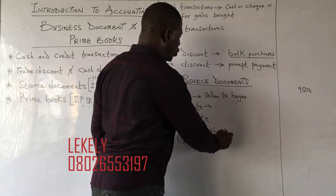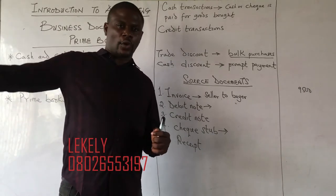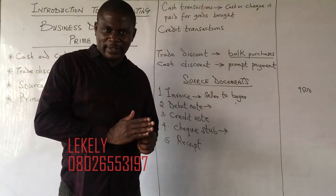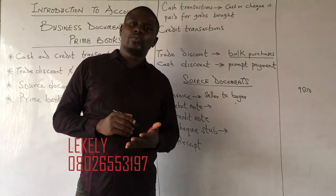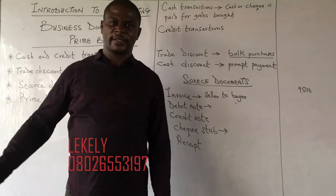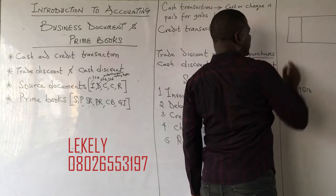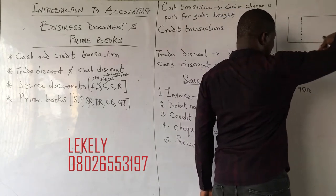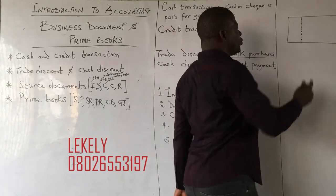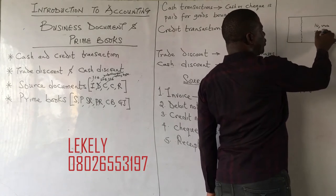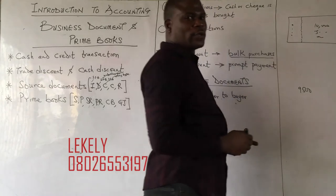The next source document is the check stub. When you write a check and cut it for someone, there is a small part of that check that is left — that small remaining part is called the check stub. It shows the details of the person you gave the check to. The person issuing the check fills both sides, so when you cut the check you retain a record of what you gave to the person.